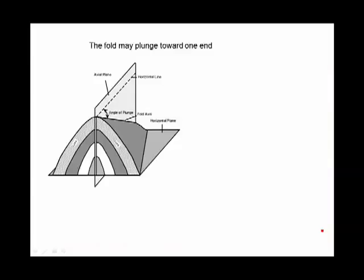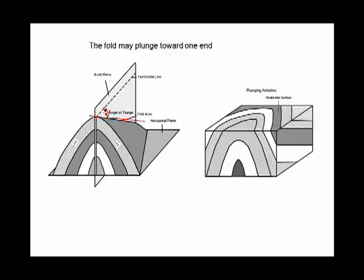Here we have a symmetrical anticline, but the axis of the fold itself is plunging down away from us. We can even measure the angle of that plunge. If you were to see it in a block diagram, you can see from the side that it's going downward.